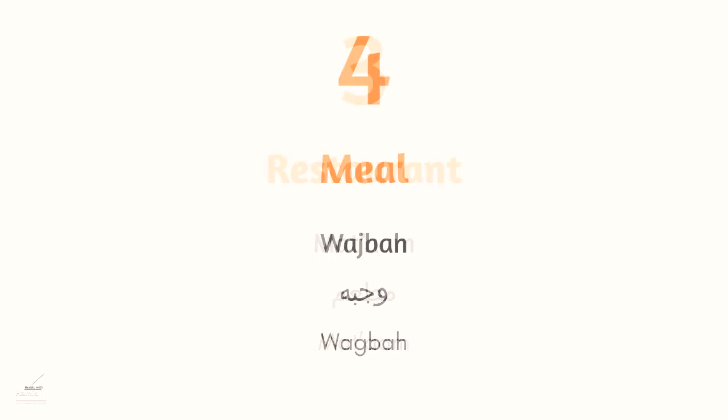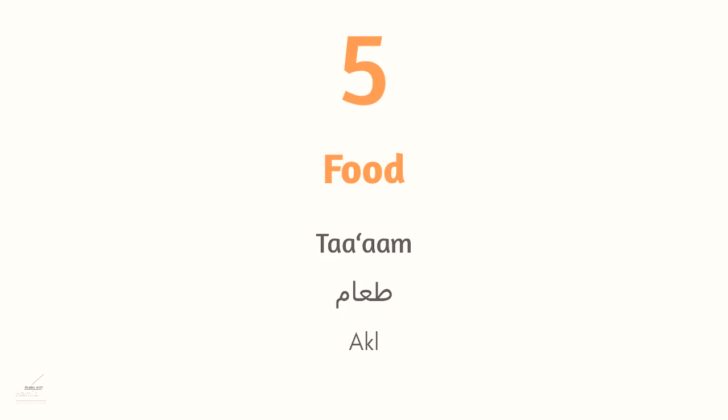The fourth word is meal: وجبة in Modern Standard Arabic — in Egyptian Arabic the ج is pronounced differently, so وجبة. The fifth word is food: طعام in MSA — remember قائمة الطعام means menu, the list of food. In Egyptian Arabic we say أكل instead of طعام.